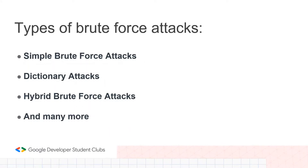The second kind is a dictionary attack. This one requires a software or tool, and the hacker also has a long list — a dictionary of words — and the tool automatically enters combinations of usernames and passwords until it finds the correct one. The third type is a hybrid brute force attack, which is a combination of a simple brute force attack and a dictionary attack. There are many more types, but these are the main three.